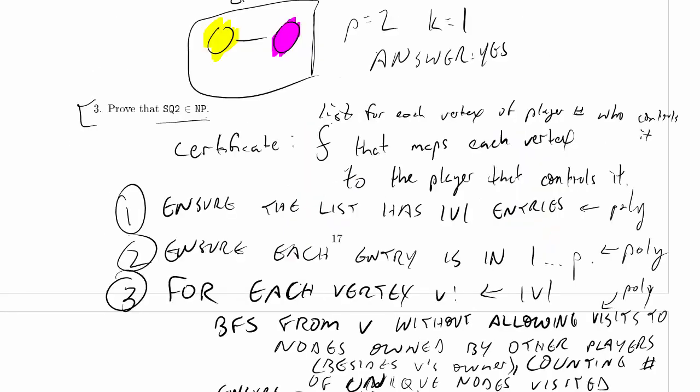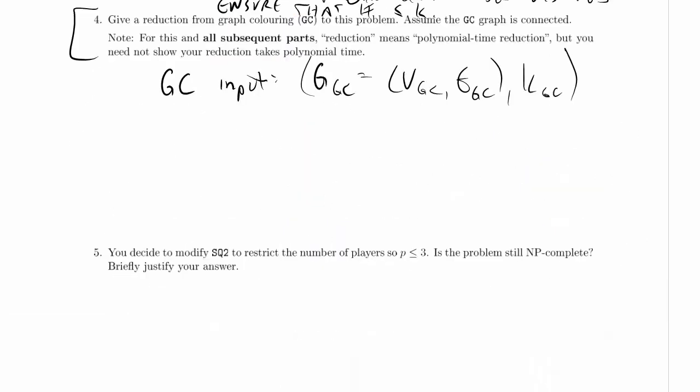That might seem scary going into the reduction, but remember, you're reducing from GC from GC to space quest 2. So the fact that space quest 2 gives you extra power is not a big deal. As long as you can find a way to limit that power in the reduction to not use that power, then you're fine. Okay, so we are reducing from GC to space quest 2.